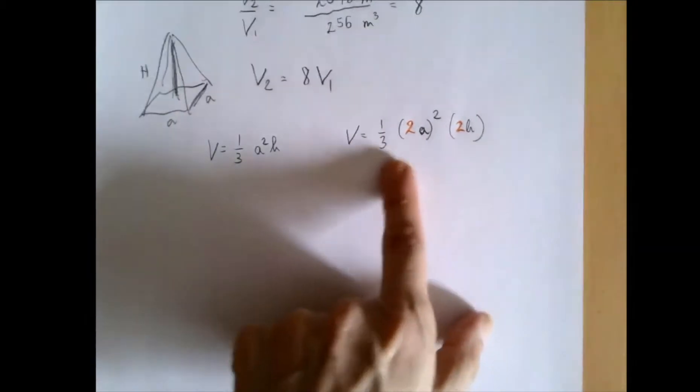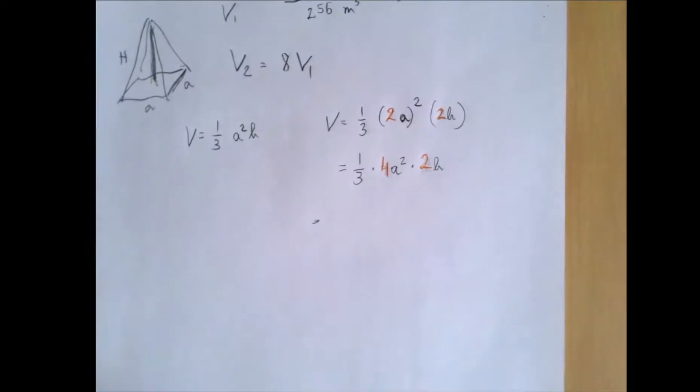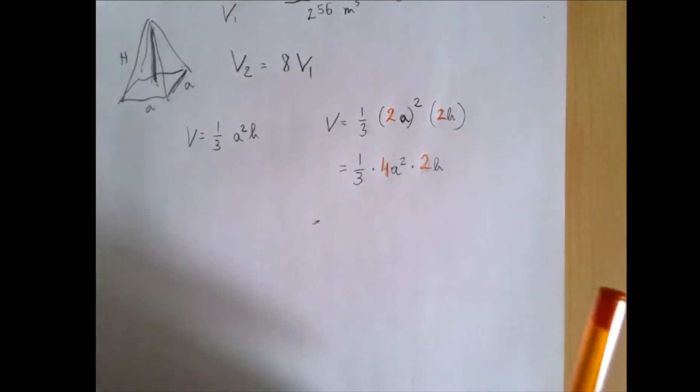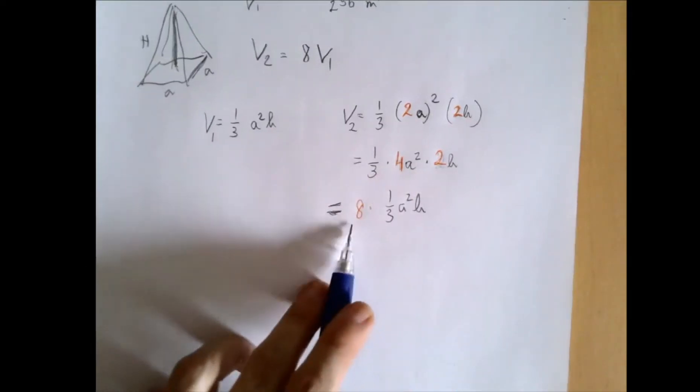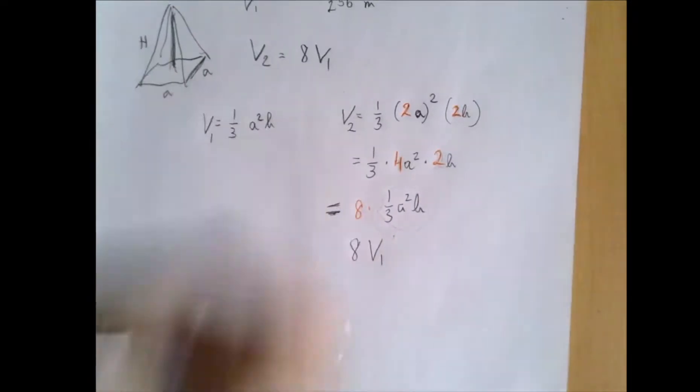So then the volume of this bigger pyramid would be 1/3 times (2A) squared times 2H, which is the same as 1/3 times 4A squared times 2H. If we keep the 4 and the 2 separate and make an 8 out of it, this is the old volume. This is 8V1.